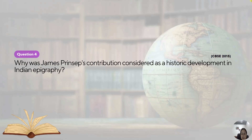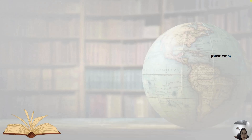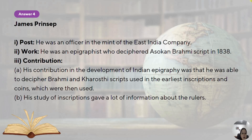Why is James Prinsep's contribution considered a historic development in Indian epigraphy? He was an officer in the Mint of the East India Company and was an epigraphist — someone who reads and deciphers inscriptions. He deciphered the Ashokan Brahmi script in 1838 and also Kharoshti. His contribution was that he was able to decipher these Brahmi and Kharoshti scripts used in the earliest inscriptions and coins. Because of this great discovery, we came to know so much about the Mahajanapadas, Magadha, and especially the work done by the great Ashoka. His study of inscriptions gave a lot of information about the rulers.